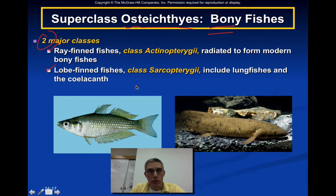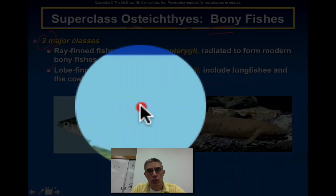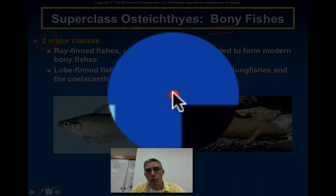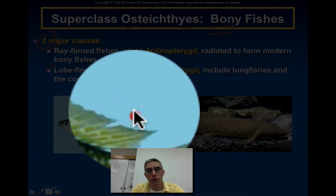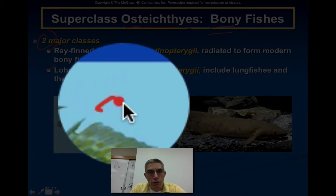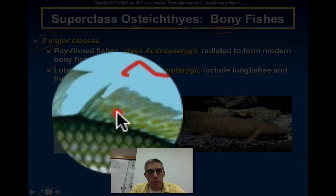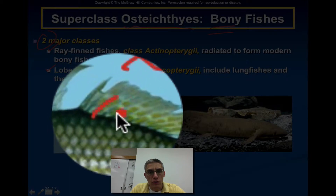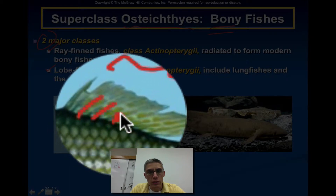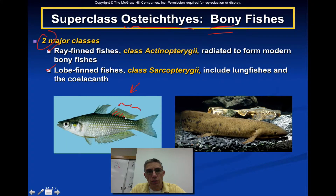Down here towards the bottom we have a good example of a Rayfin fish. The primary thing you want to look at is the differences between the fins. Each of the fins on this fish are basically made up of a series of rays, and the rays tend to be a kind of rigid part found within the fin. Over here on the right-hand side are the Lobefin fishes.